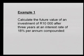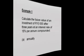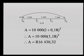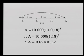Example one: calculate the future value of an investment of R10,000 after three years at an interest rate of 18% per annum compounded annually. You can draw a timeline to clarify the situation — from T0 to T1 is one year. Using the compound interest formula: 10,000 × (1 + 0.18)^3, which gives you R16,430.32.